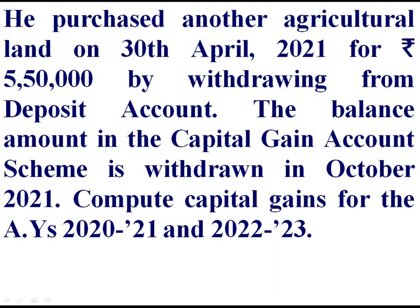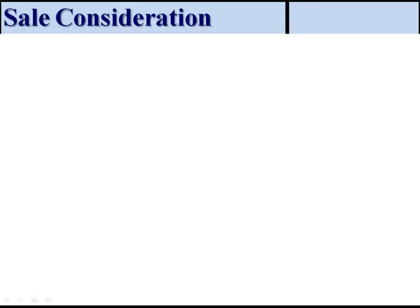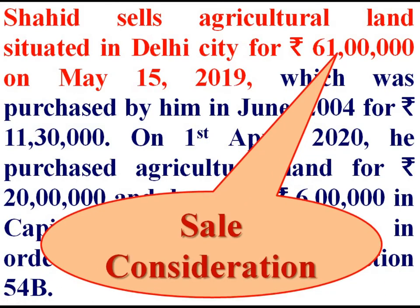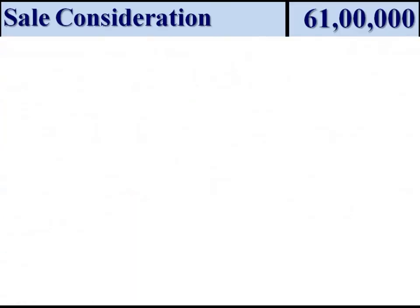First of all, we shall compute the capital gains for the previous year 2019-20, that is the assessment year 2020-21. We have to see what is the sale consideration. Shahid sells agriculture land situated in Delhi City for Rs 61 lakh. This Rs 61 lakh is the sale consideration.